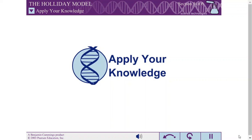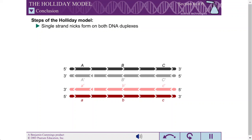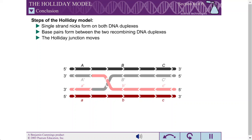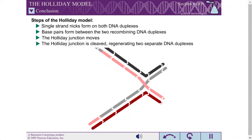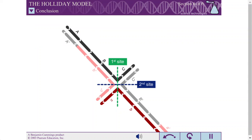How well do you understand the Holliday model? In this section you will find out. In the first step of the Holliday model, single-strand nicks form at identical positions in two homologous DNA duplexes. DNA strands near the nick sites peel away from their complementary strands and base pair with the homologous duplex — this is called strand invasion — forming a Holliday junction. The junction then moves along the DNA by repeated melting and formation of base pairs, a process called branch migration. Finally, cleavage of the Holliday junction to regenerate two separate DNA duplexes is called resolution, and can occur at either of two sites.